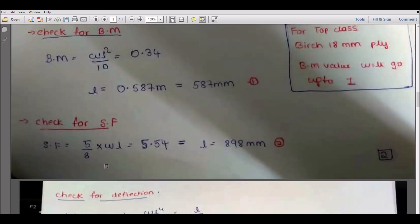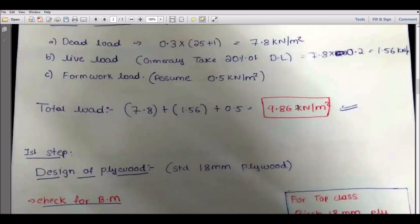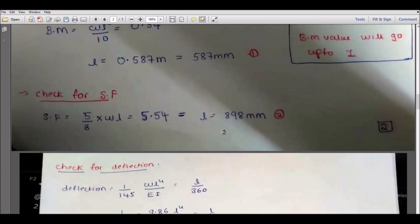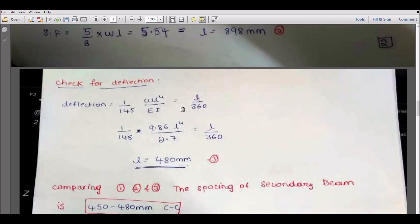You have to check for shear force. The shear force formula will be 5/8 into W·L, so the value of shear force will be 5.54. If you put this same 9.86 W value, you will get 898mm. Same for deflection, calculate this one then you will get the length of the deflection.